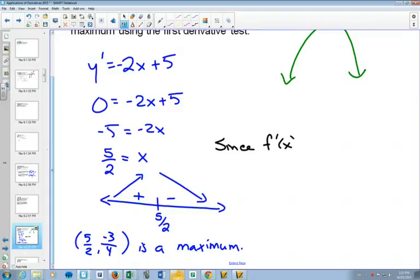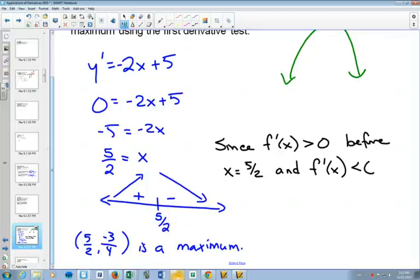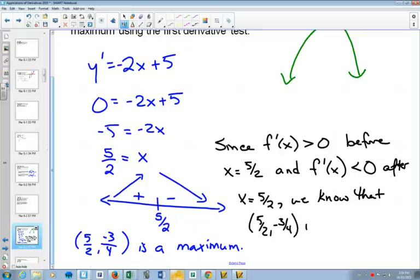Since f prime of x is greater than zero before x equals 5 over 2, and f prime of x is less than zero after x equals 5 over 2, we know that this point 5 over 2 comma negative 3 quarters is a maximum.